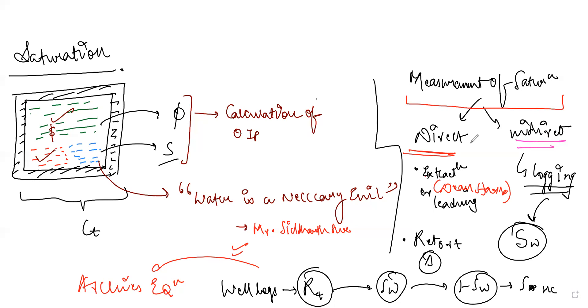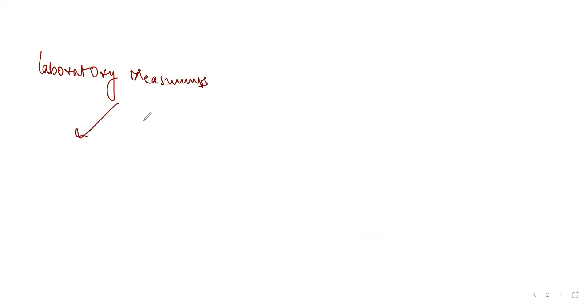Saturation, absolute permeability, and porosity are all measured in the laboratory. Laboratory measurements of reservoir properties are categorized into two main classes. The rock used in the lab is not just any rock — there is a specific procedure to pull it from the subsurface, called coring.